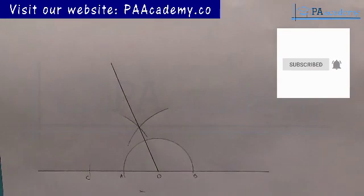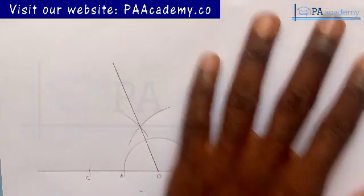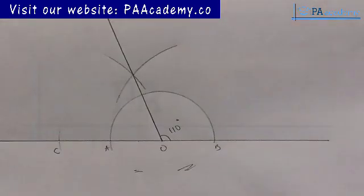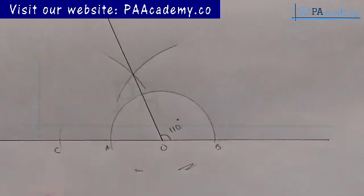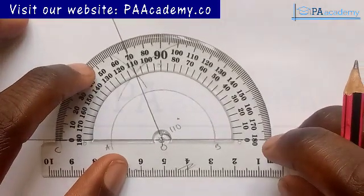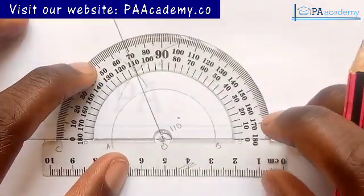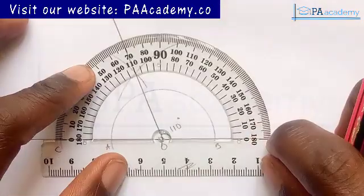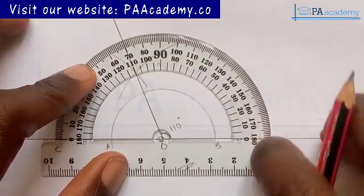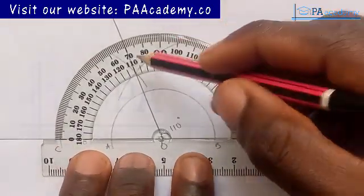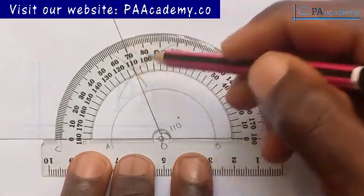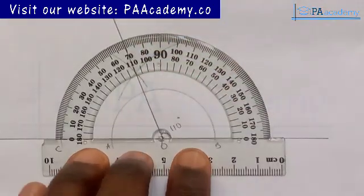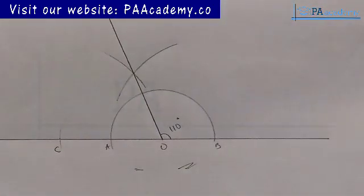Let me put in the protractor to confirm my angles. If you place it there, you can see that we are having an angle of 110 degrees. That lets us know that we are correct.